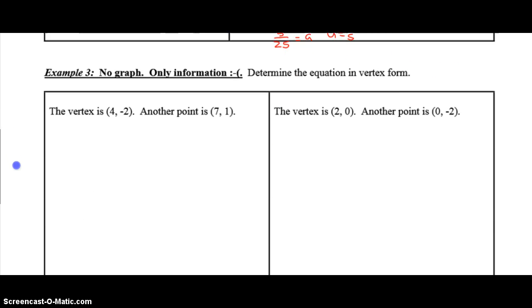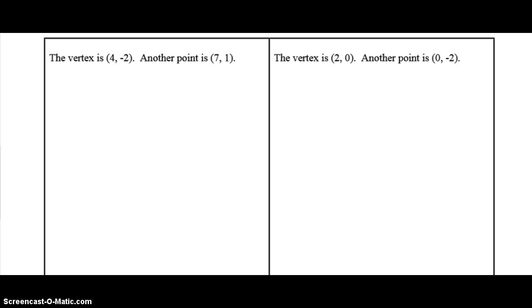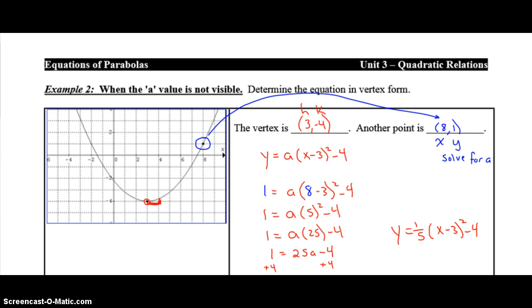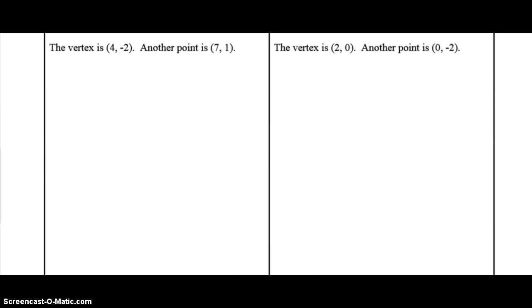Sometimes you get the same question, but you just don't have the graph. So this is the same thing. We know the vertex, we know another point. Just like this question. We knew the vertex, we knew another point. So the method exactly the same. We're going to substitute the 4 in for the h, and the 2 in for the k. And we're going to leave the a as a for now. So leave the a. The h is 4. The k is negative 2.